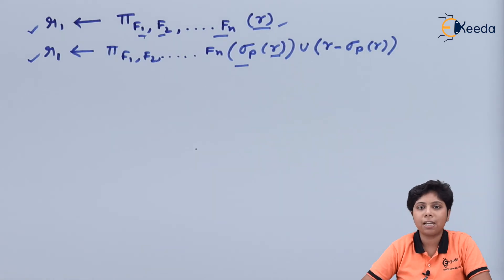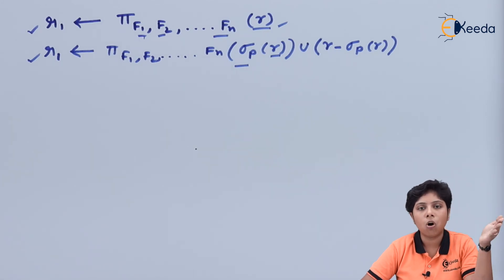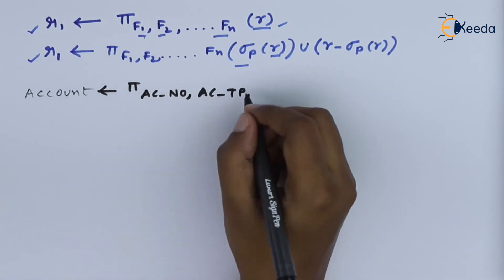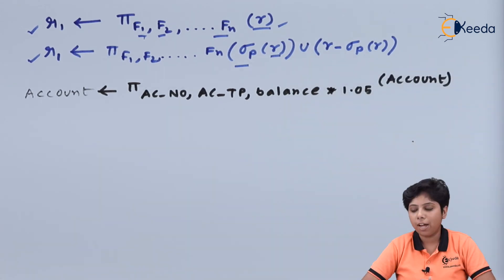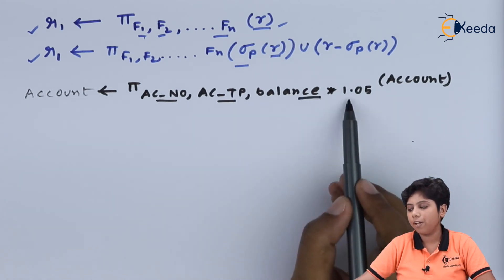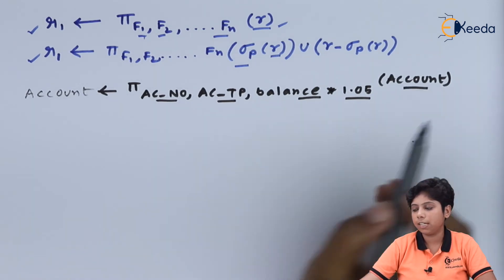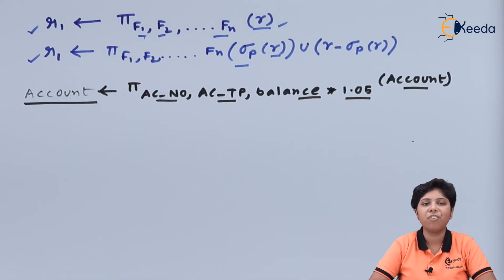We will take an example to see how to update the balance and give it an interest of five percent annually across all accounts. Here we signify that the account number and account type will remain the same, whereas all balances will be increased by five percent annually. The relation to be updated is the account relation, and the updated relation is again assigned back to the account relation.